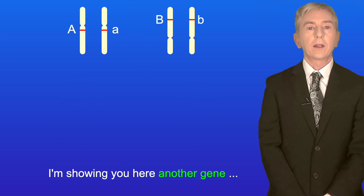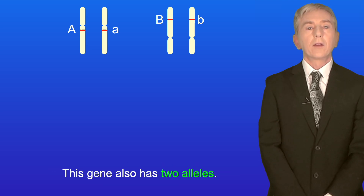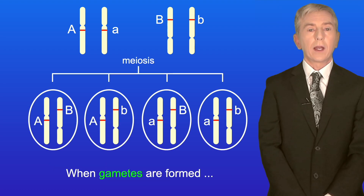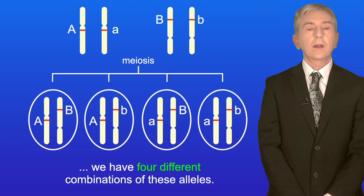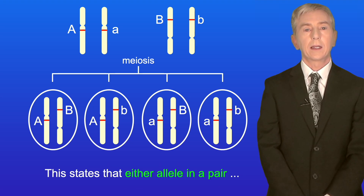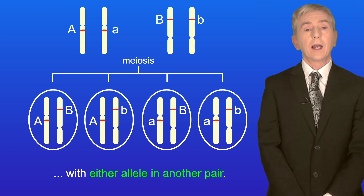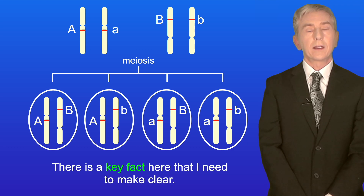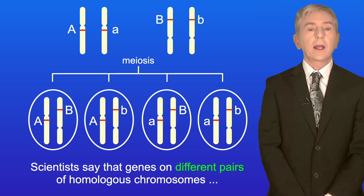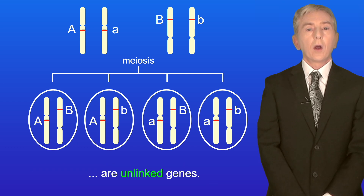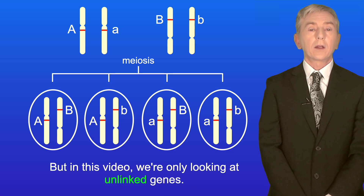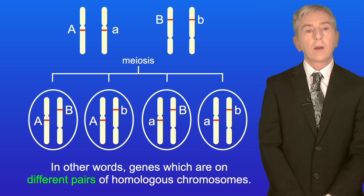I'm showing you here another gene on a different pair of homologous chromosomes. This gene also has two alleles and this individual is also heterozygous for this gene. When gametes are formed we have four different combinations of these alleles. This is summarized by Mendel's law of independent assortment, which states that either allele in a pair can combine randomly with either allele in another pair. This applies if the two genes are on different pairs of homologous chromosomes — scientists say these are unlinked genes. In this video we're only looking at unlinked genes, in other words genes which are on different pairs of homologous chromosomes.